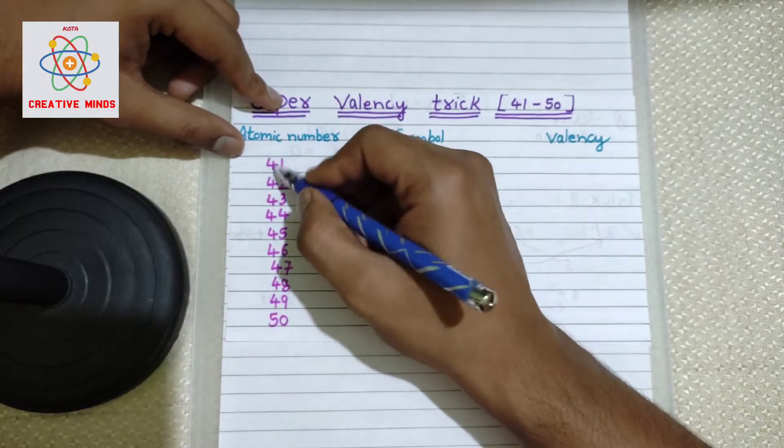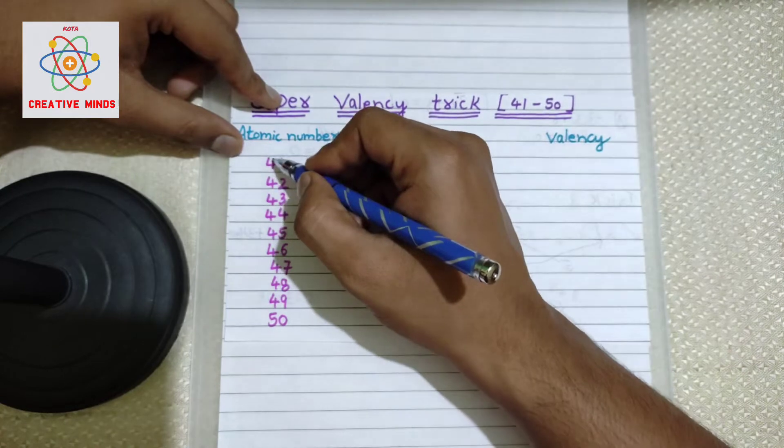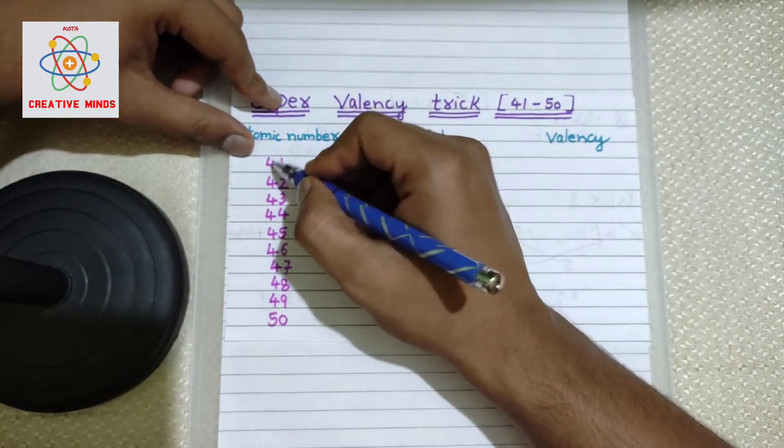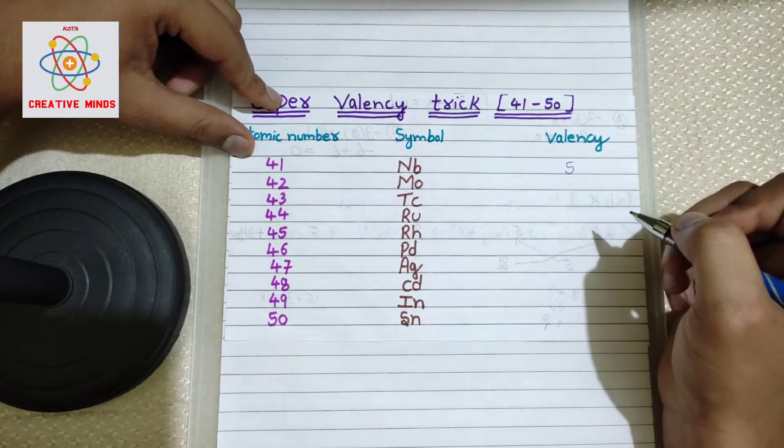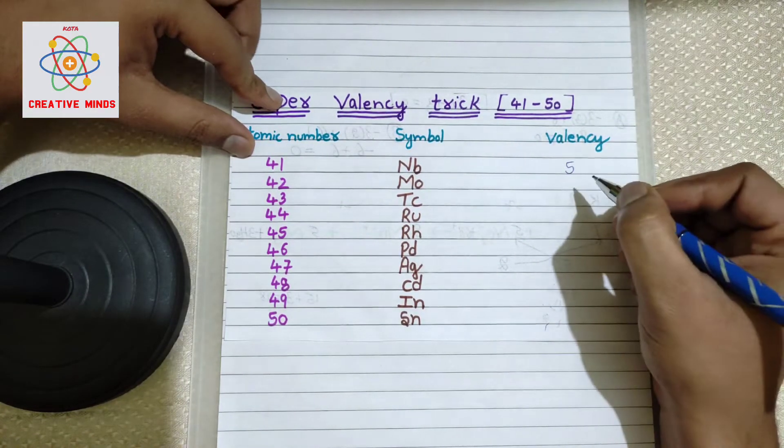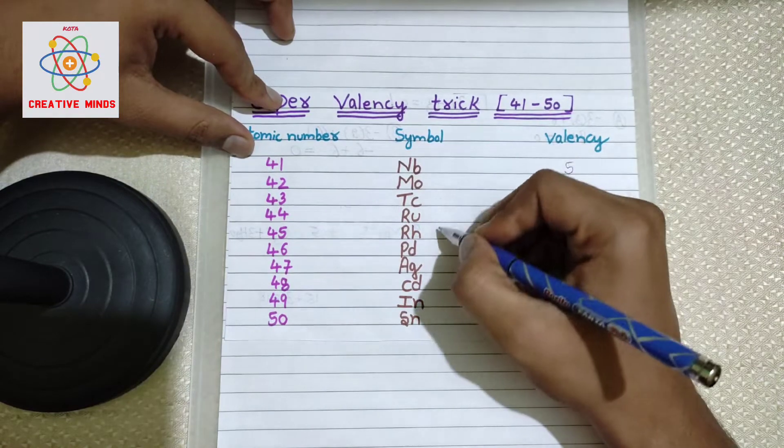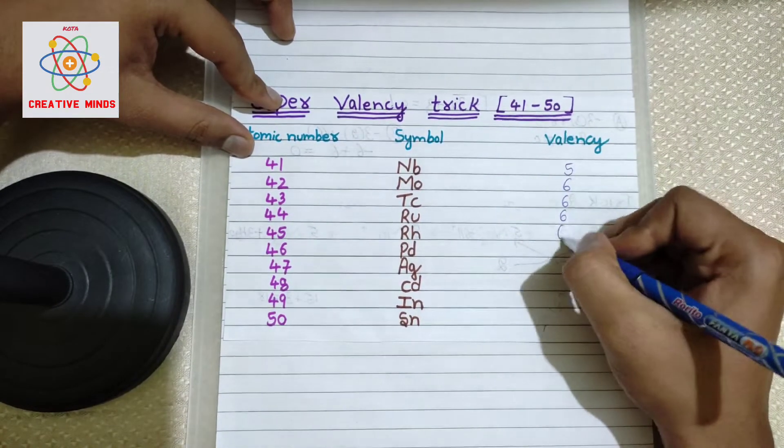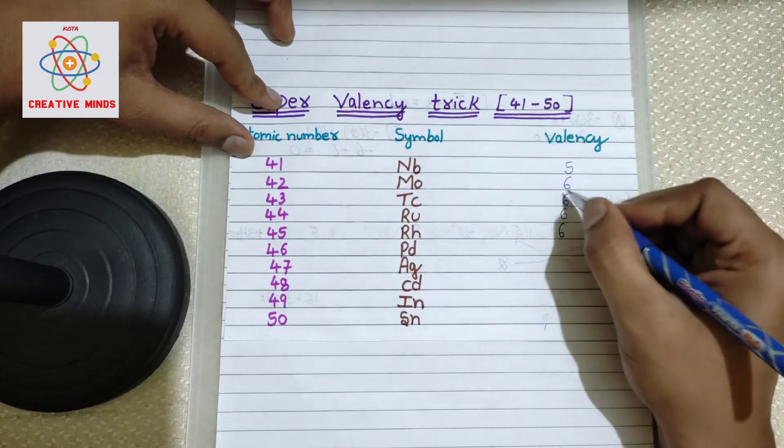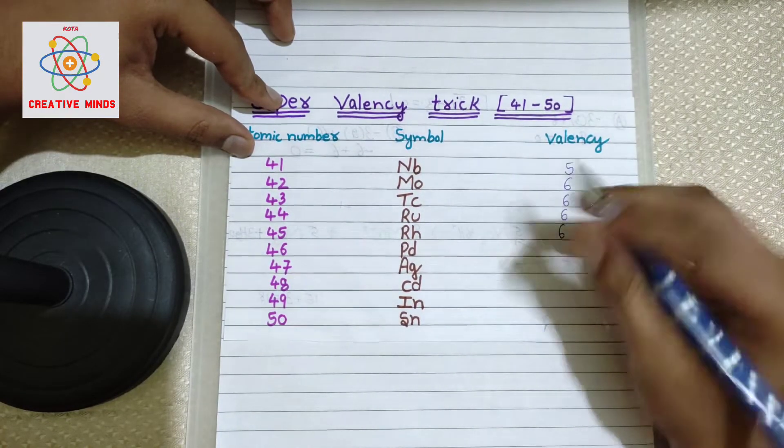Just focus on the first number, four. If we add one to the four, what will be your answer? Five. This is how you can remember this. Now, the next four elements' valency will be six, six, six, six. One, two, three, four. Next four elements valency will be six. Now this much is finished. Five elements we have finished writing the valences.